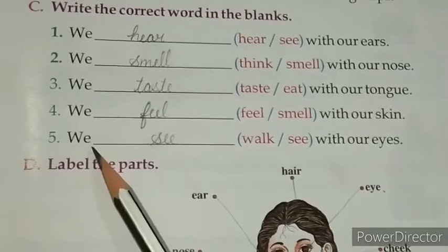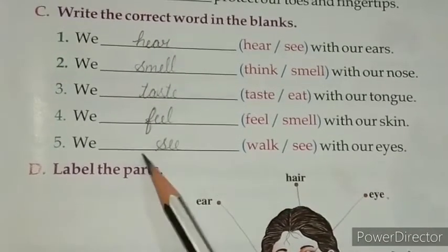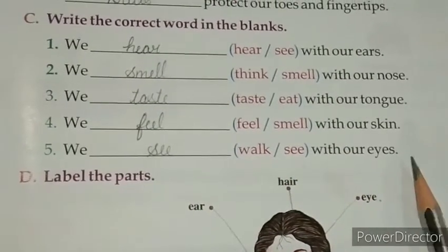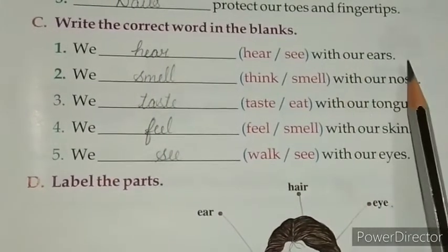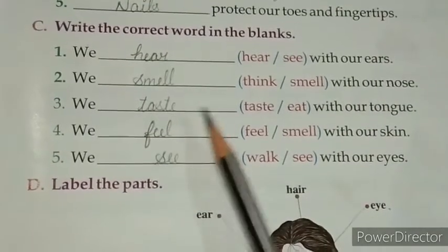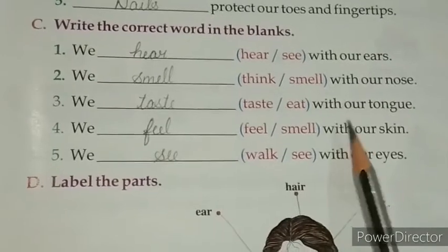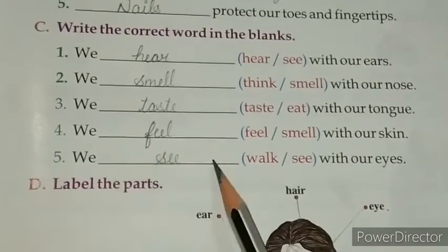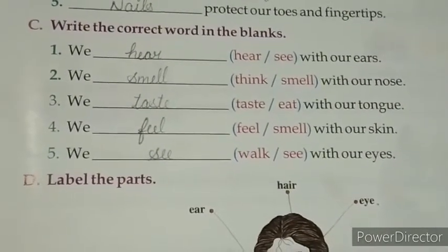Next one: we see — S-E-E — with our eyes. Again look here: we hear with our ears, we smell with our nose, we taste with our tongue, we feel with our skin, and we see with our eyes. Understood, all of you?